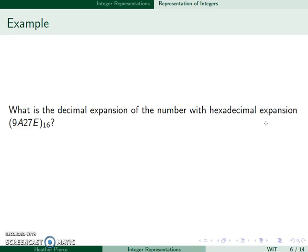So what's the decimal expansion of this number? This is in the ones place, this is 16, 16 squared, 16 cubed, so the last one is 16^4. So 9×16^4 + 10×16^3 + 2×16^2 + 7×16 + 14, where A is equivalent to 10 and E is 14.